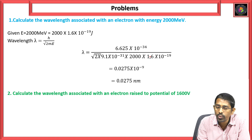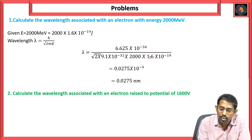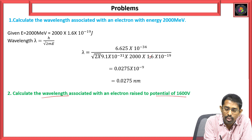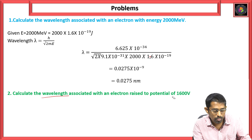The second problem: calculate the wavelength associated with an electron raised to a potential of 1600 volts. The potential V is given as 1600 volts and we have to calculate the wavelength for this electron.